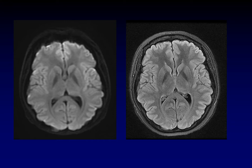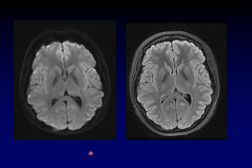Another important sequence is diffusion-weighted imaging. It measures how quickly a water molecule can travel from one area to another. Intracellular water is pretty restricted, but extracellular water can travel well — think of this as a map of intracellular to extracellular fluid. When diffusion is restricted, we plot that as bright on this image. This can happen in the setting of a stroke, where extracellular fluid rushes into cells. We use it mostly in the setting of strokes.